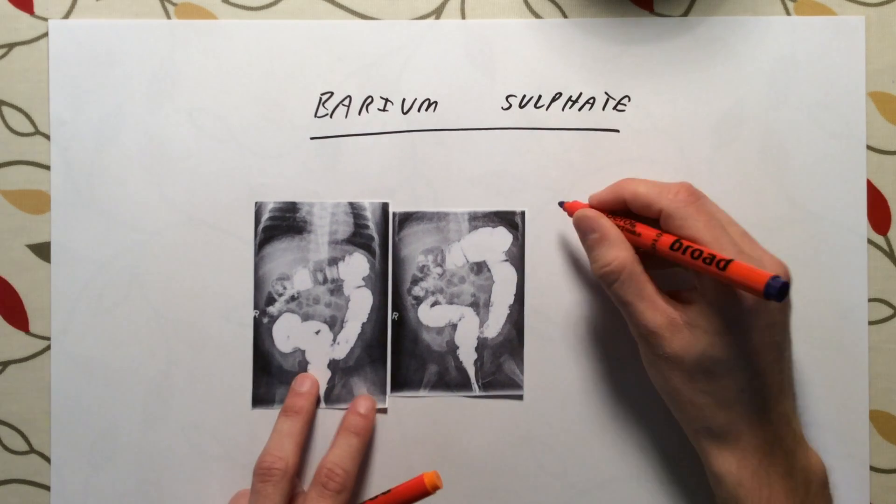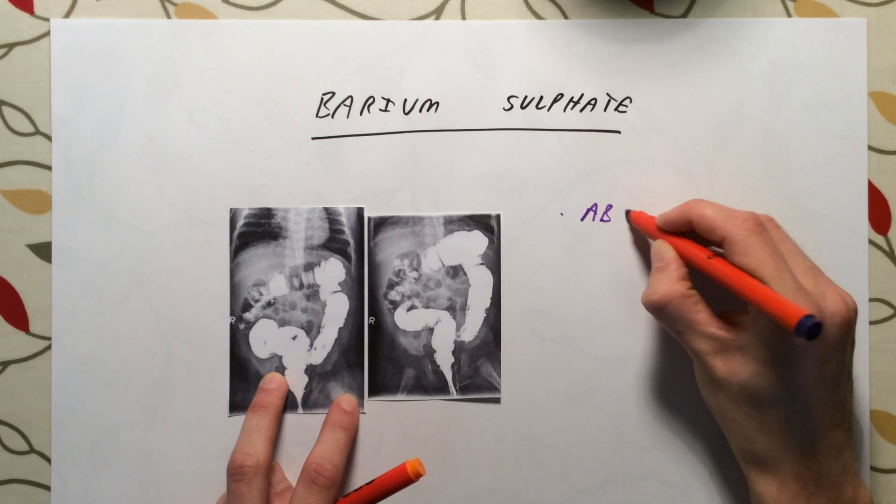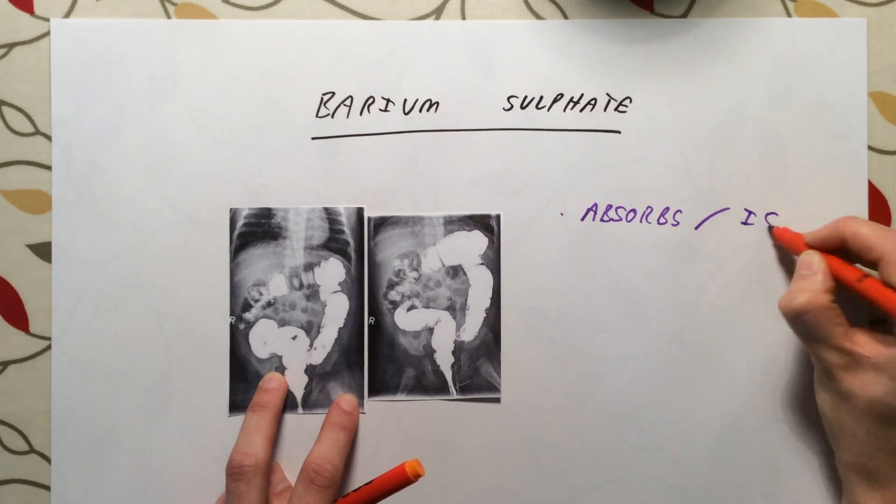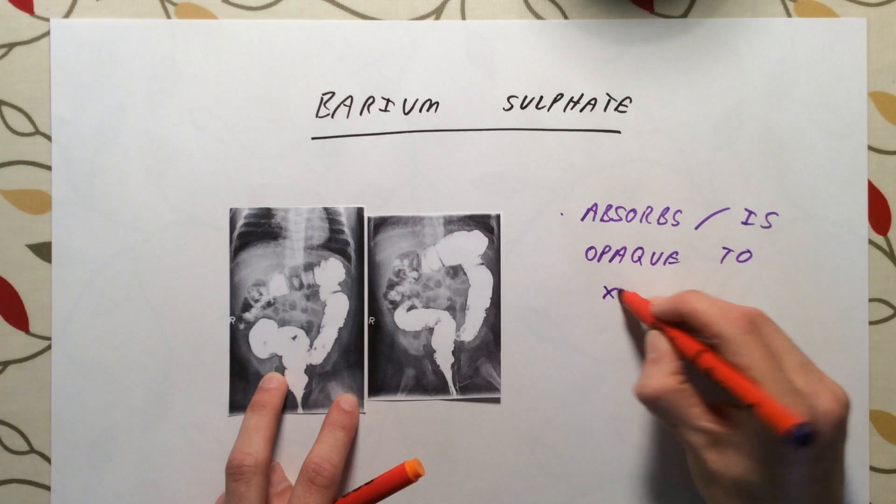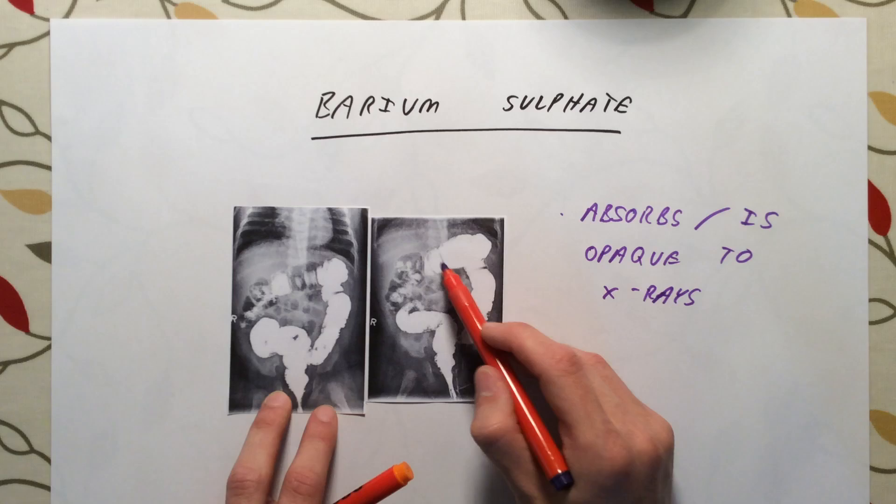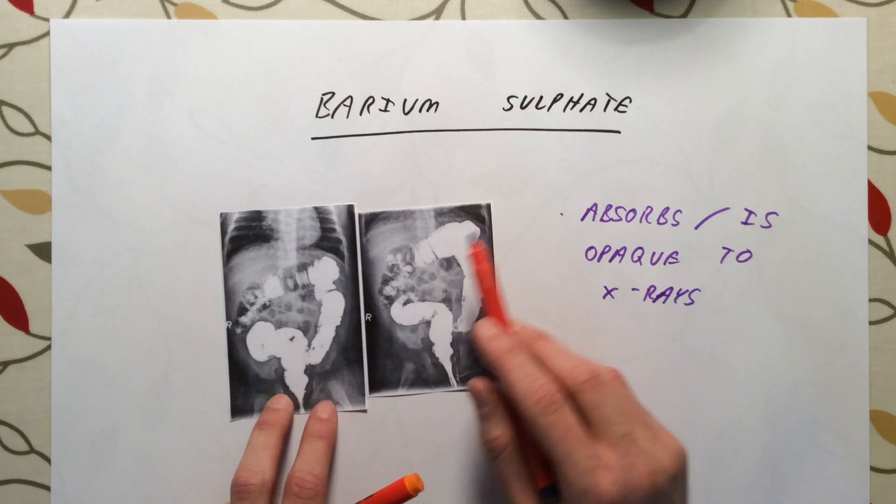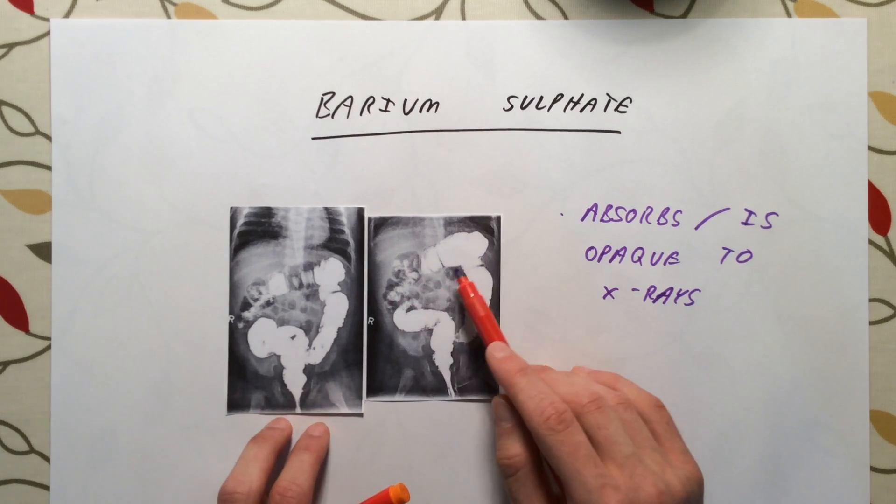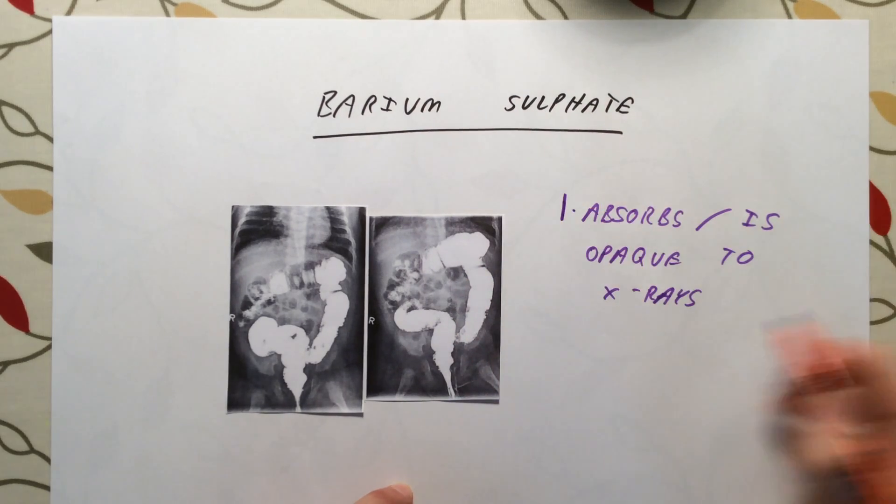If you X-ray this patient, barium sulfate absorbs or is opaque to X-rays. Similar to bone, you see a very strong white area here where X-rays have not passed through. Therefore, it can be used to identify things like tumors in the digestive system or other problems with a patient's digestive system. That's the first reason it's used. It is opaque to X-rays.